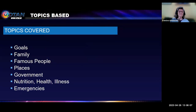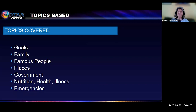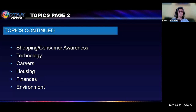The topics are: goals and personal information, family and family relationships, famous people and biographies, places, government, and several units — three units — to do with nutrition, health, illness, and emergencies, which is similar to the IELCE civics unit on emergencies and disasters. Then shopping and consumer awareness, technology, careers, housing, finances, and the environment.